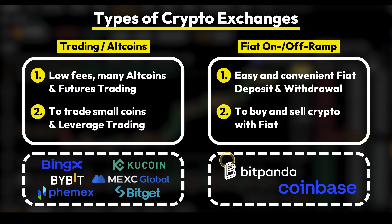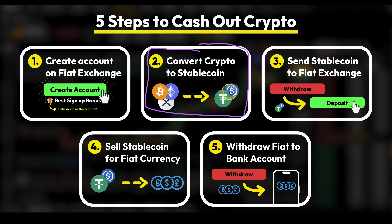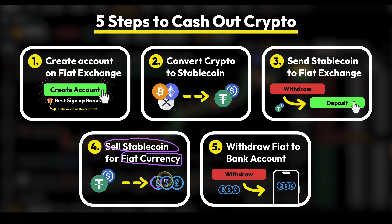My favorite examples of fiat exchanges are Bitpanda, which is my personal favorite, but a great alternative is also Coinbase. Here are five steps that work 100% to withdraw any crypto you have on a trading exchange back to your own bank account. We start by creating an account on a fiat exchange. Then from our trading exchange, we first convert any crypto to a stablecoin such as USDT or USDC. Then we send that stablecoin to the fiat exchange. On the fiat exchange, we sell the stablecoin for our desired fiat currency — such as euro, US dollars, or British pound. And then in our last step, we withdraw that fiat from the fiat exchange back to our own bank account.